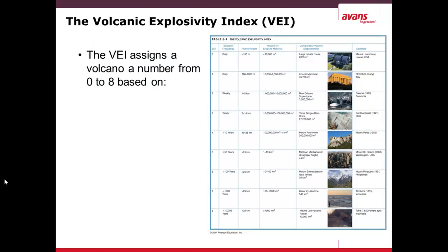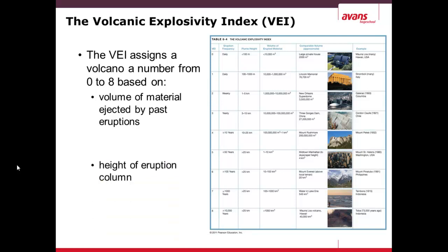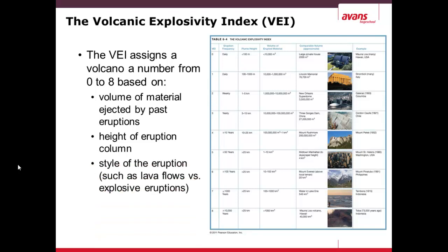The magnitude of a volcanic eruption is measured by the VEI — the Volcanic Explosivity Index — which is a scale from 0 to 8, shown in the table on the right. Zero represents a daily eruption such as those on Mauna Loa, while the largest eruptions, such as Mount Toba in Indonesia 73,000 years ago, can spew more than 1,000 cubic kilometers of material. The index measures not only volume, but also the height of the eruption column (up to 25 km into the atmosphere), the style of eruption (lava flow vs. explosive), and the duration.